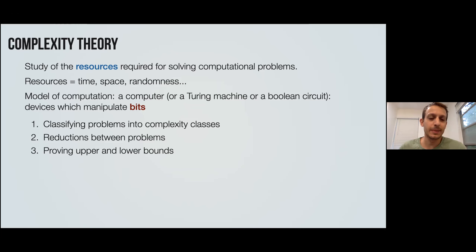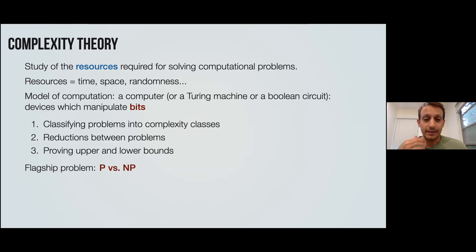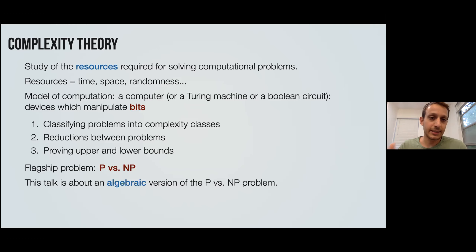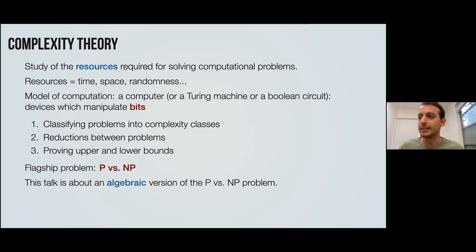We want to prove upper and lower bounds on those resources. Upper bounds are usually efficient algorithms, whether they run very fast or use very little memory. Lower bounds are proofs that any algorithm needs a certain amount of time or certain amounts of space. As you well know, we are much better at proving upper bounds than proving lower bounds, generally speaking. The flagship problem is, of course, P versus NP. This talk will be about the mirror universe of algebraic complexity — in particular, we will state an algebraic P versus NP problem, which is the main open problem in algebraic complexity theory.